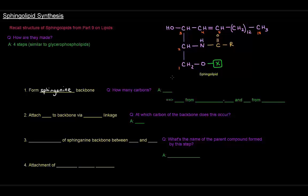How many carbons is that? As you can see from here, there are 18. Sixteen of those carbons come from palmitoyl-CoA, which is an activated fatty acyl-CoA. And two of them come from the amino acid serine, which actually has three carbons. We'll have to pay attention to where that third carbon actually goes.